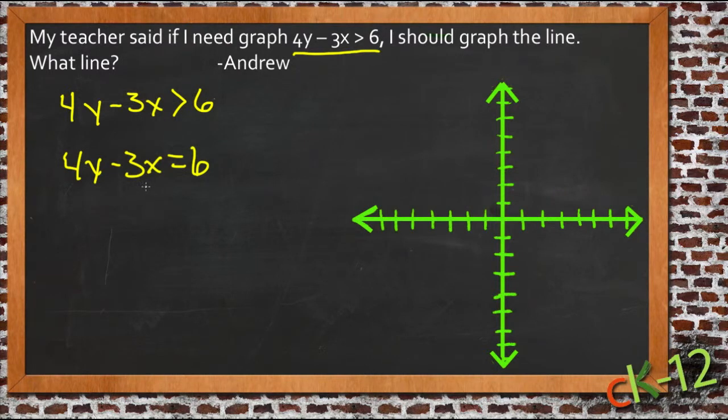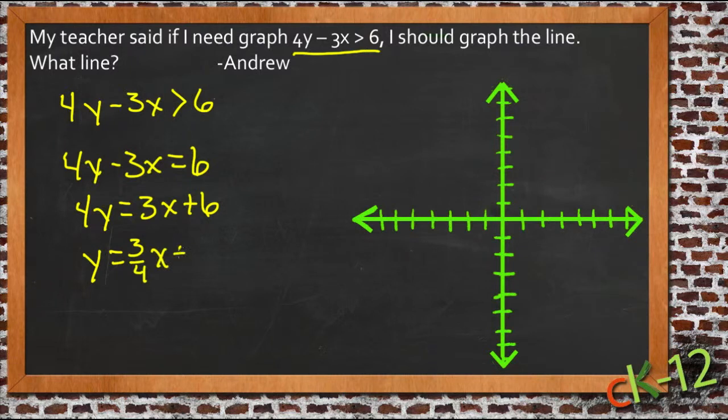So here, I like doing the slope-intercept formula just because I think it's easier to graph that way. So let's solve this in slope-intercept formula. And we'll have 4y equals 3x plus 6 and then divide everything by 4 and we get y equals 3 fourths x plus 6 fourths, which is 1 and a half.